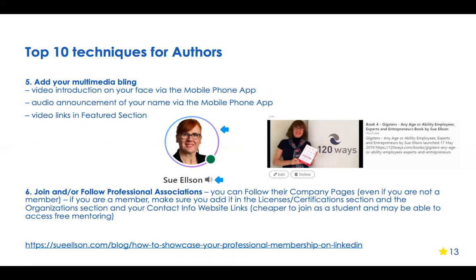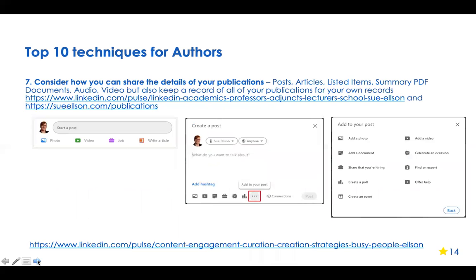Technique six: join professional associations. I'm very excited to be a member of the Australian Society of Authors. They've given me a page on their website all about me, so when people google me, that link comes up on the ASA website. If you have the option of a profile page on your publisher's website or professional association, make sure it's up to date with a current photo and all your books listed. Showcase your membership on LinkedIn in certifications, organizations, and website links.